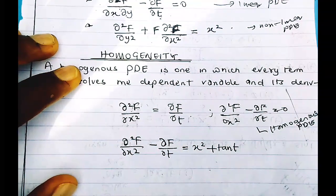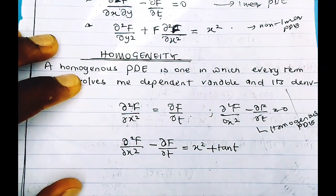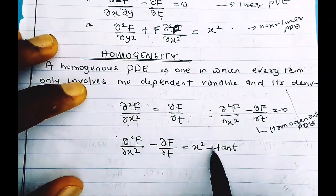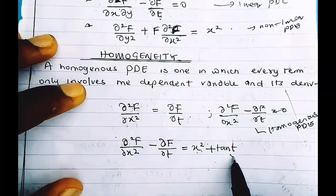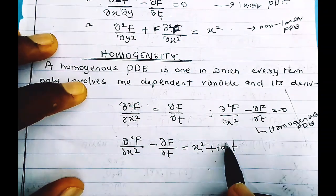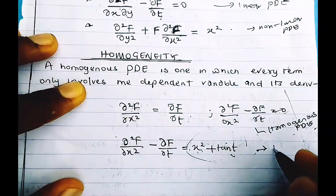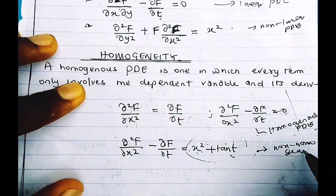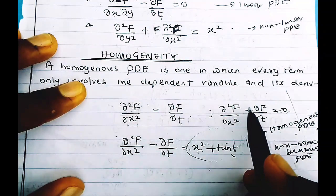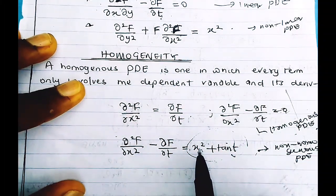A non-homogeneous PDE contains terms involving the independent variables alone, apart from the derivative terms. For instance, if the equation includes x² or t as separate terms, it is non-homogeneous. A practical rule: if the PDE equals zero, it is homogeneous; if it equals a function of the independent variables, it is non-homogeneous.